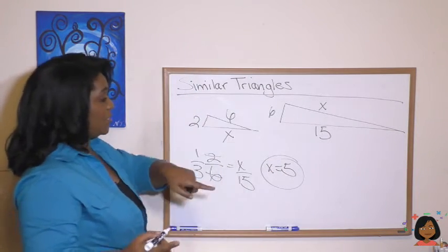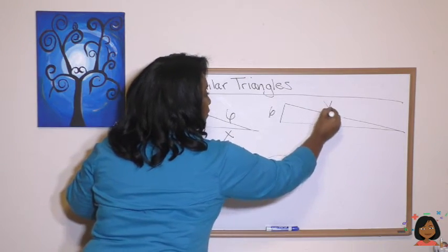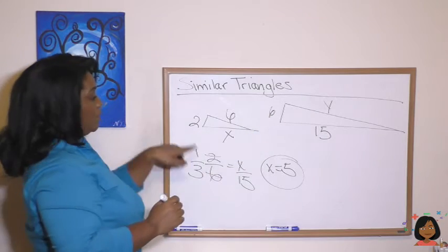Okay, what about this? Actually, that is an x. Let's make this a y. I should have made that a little bigger. Let's solve for this side. So again, we use the fraction that we know, the ratio that we know, which is 2/6.